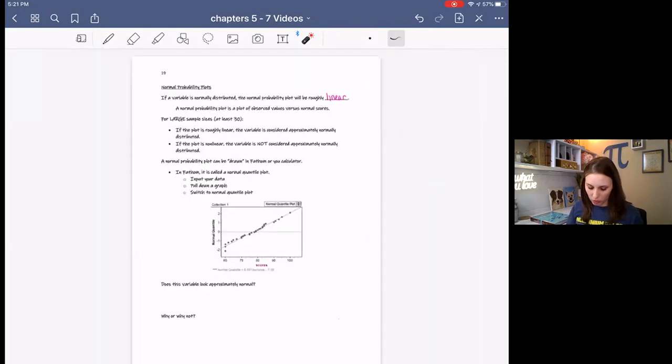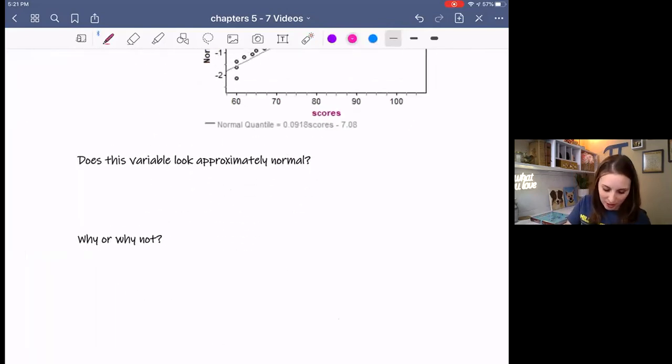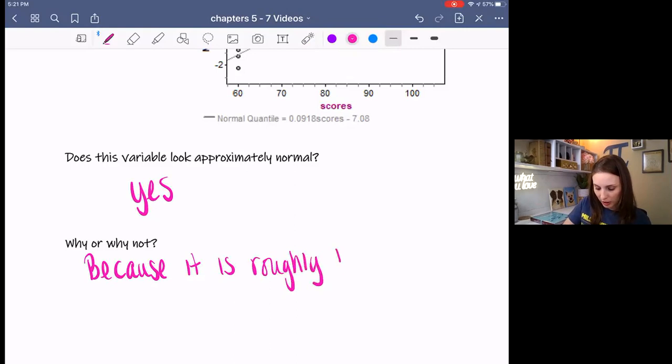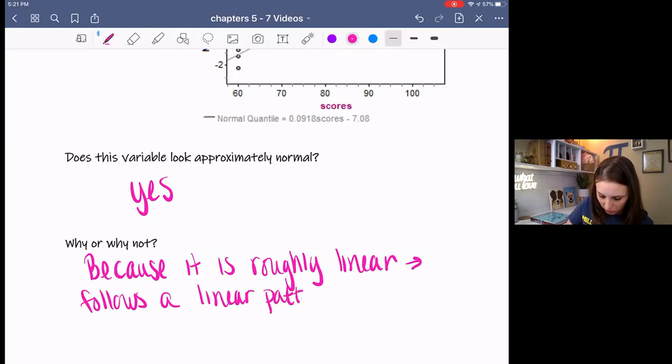So we would say that this data is approximately normal. Or you can use, oh sorry I answered the questions down here. Does the variable look approximately normal? Yes, I've already answered that. Why? Because it is roughly linear. Follows a linear pattern, I should say. We'll say that. Follows a linear pattern roughly. Not exact, but close.